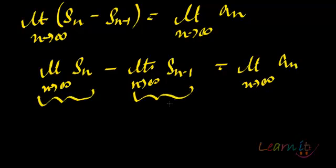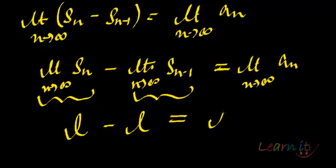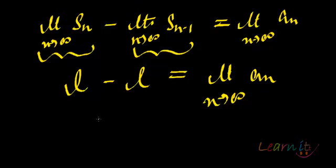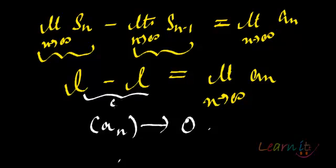Now, this limit is L minus L. Limit N tends to infinity Sn is L. Of course, the limit as N tends to infinity Sn minus 1 will also be the same. So that means L minus L is the limit of the sequence An, that means An actually tends to 0.